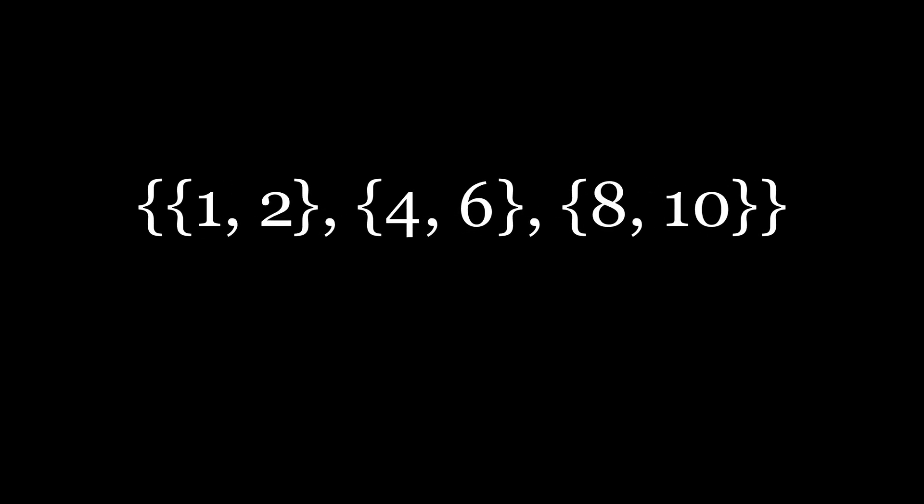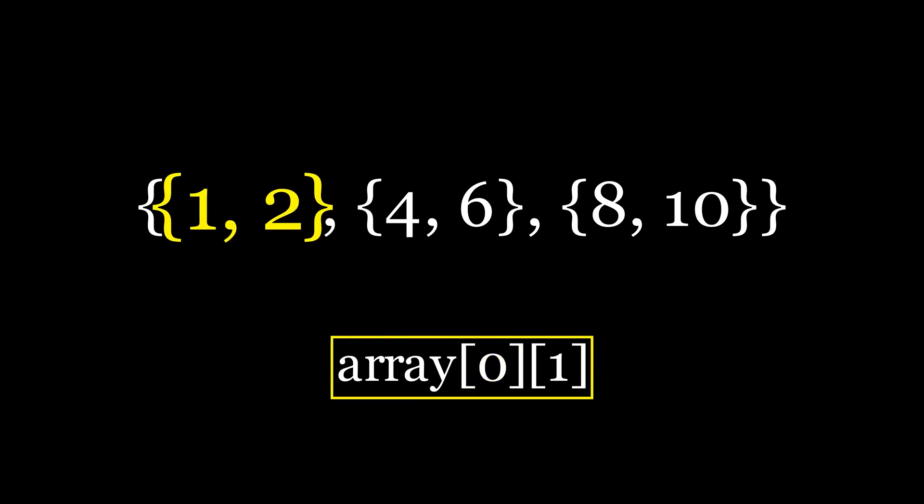Now, arrays can have multiple dimensions. Here we have an example of a one-dimensional array, which contains base elements. Now, this is a two-dimensional array, which is essentially an array of arrays. So, for instance, if you want to access the second element of the first subarray, you would index it like this. Where zero means the first subarray and one means the second element within the first subarray. As you can see, arrays can be extended to n dimensions.